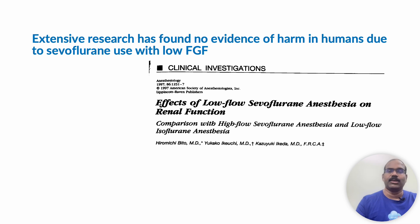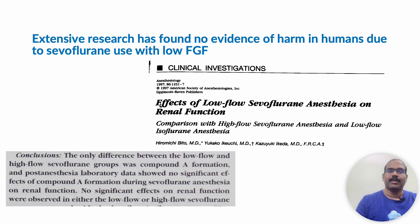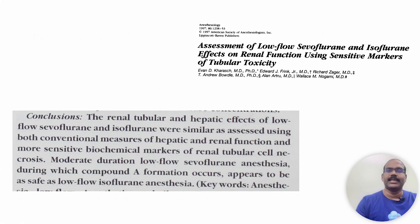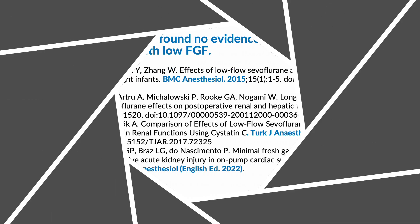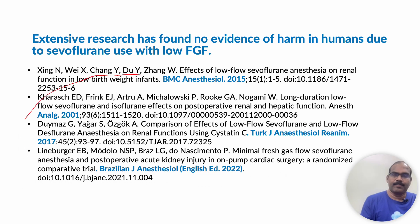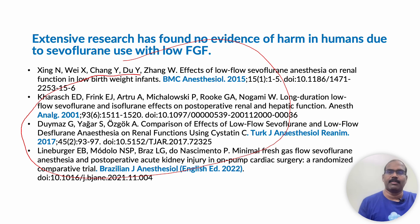Here is an Anesthesiology 1997 article published on the effects of low flow sevoflurane anesthesia on renal function, showing no significant effects of Compound A formation on renal function even in low flow sevoflurane administration. Another study published in the 1997 Anesthesiology journal using more sensitive biomarkers found biochemical markers of renal tubular cell necrosis to be similar to the isoflurane group. There are many research articles supporting sevoflurane use with low fresh gas flows — here are some of them for your reference.